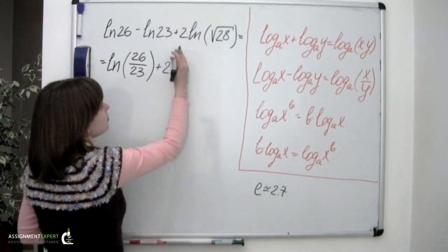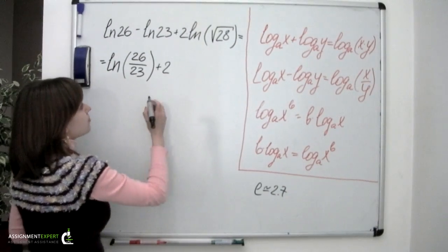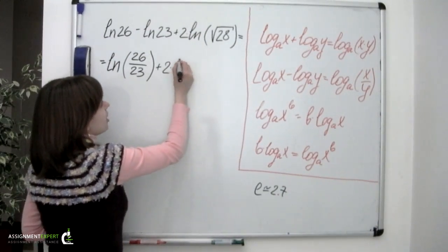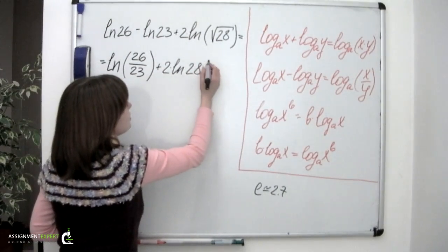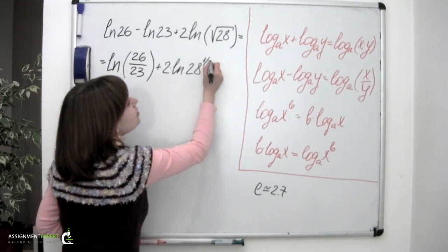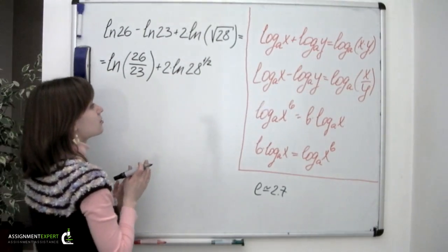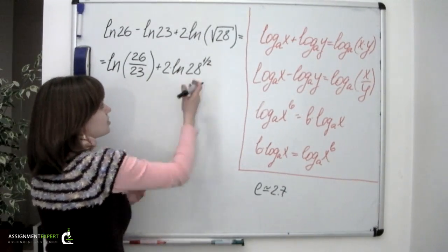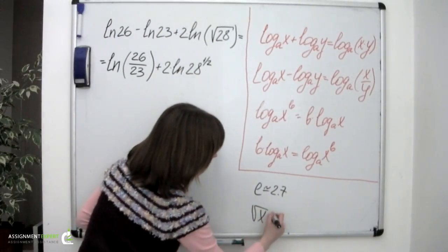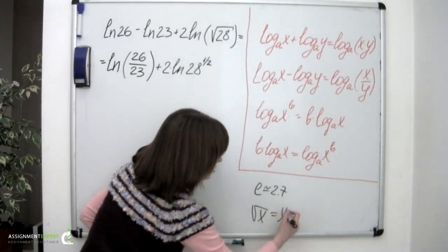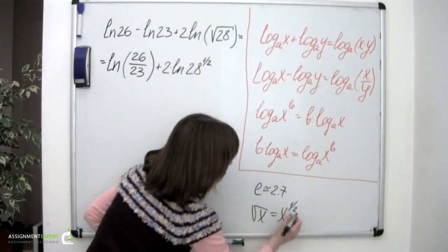And we have the third logarithm left. Plus 2 times ln of 28 raised to the one-half power. Which is the same. Square root of x is the same as if we written x raised to 1 half.